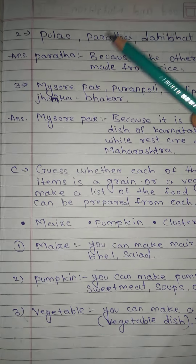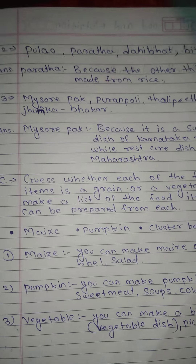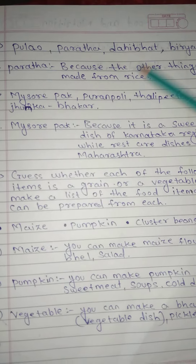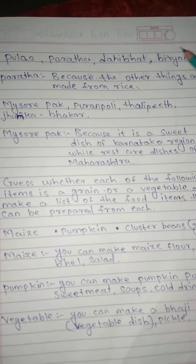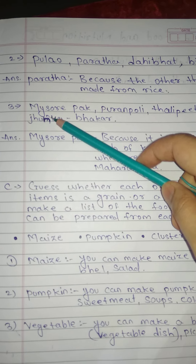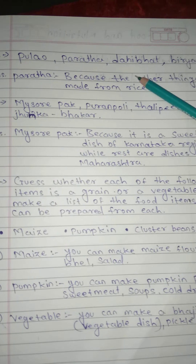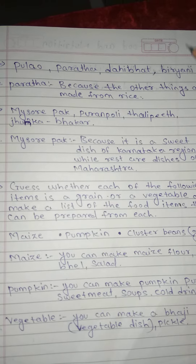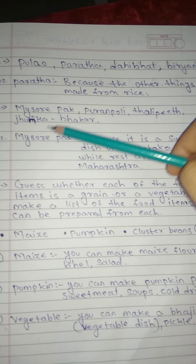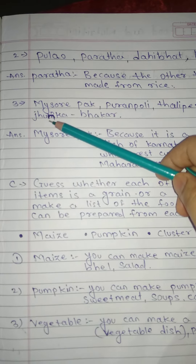No. 2: Pulao, Paratha, Dahi Bhat, Biryani. Answer: Paratha — because the other items are made from rice.